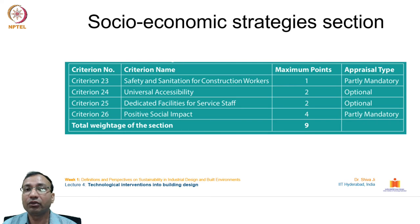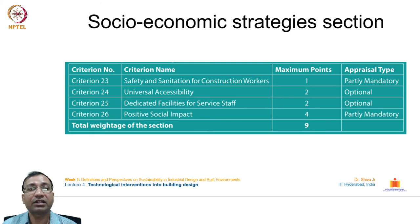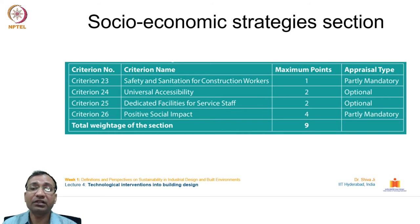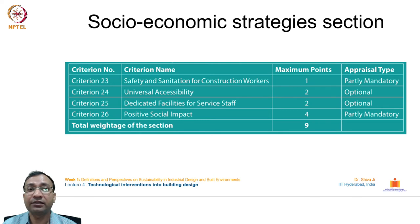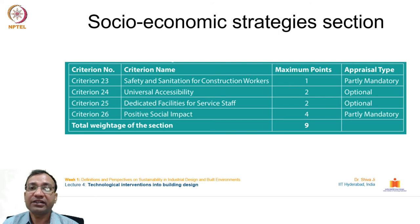The socio-economic strategies section has four criteria: safety and sanitation for construction workers (1 point), universal accessibility (2 points), dedicated facilities for service staff (2 points), and positive social impact (4 points). Construction workers have historically lived in poor conditions without potable water or sanitation. Recent developments require taking care of the workforce, ensuring basic necessities including water, sanitation, and living facilities for workers and their families.